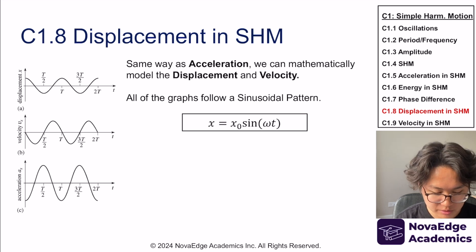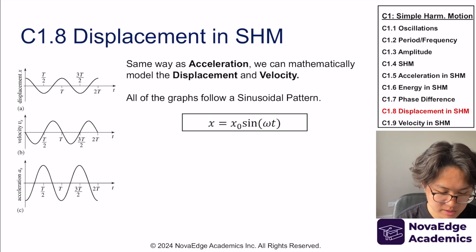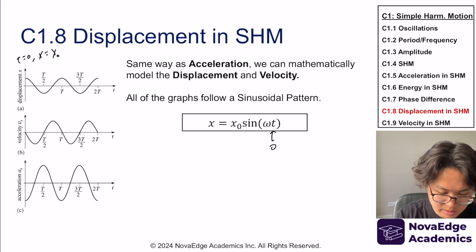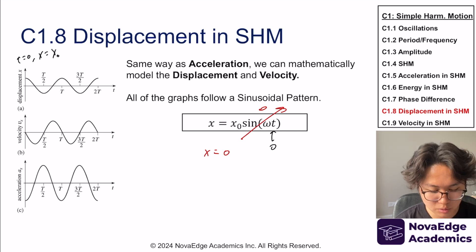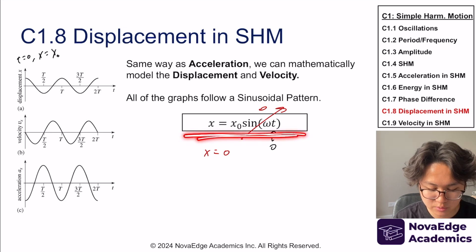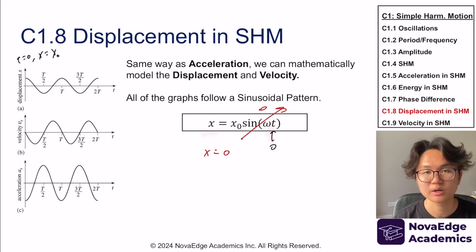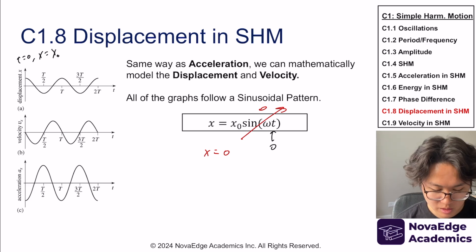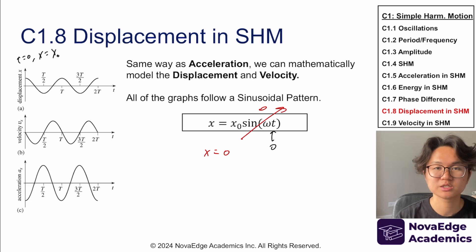Here's a problem. If you notice, the displacement starts from a positive value at t equals zero — x is equal to x₀. But if I put t equals zero into the sine function, it becomes zero, so x equals zero. These two don't match. So I actually need to correct it a little bit — in other words, put a phase shift in it. I need to shift the graph by a certain amount.